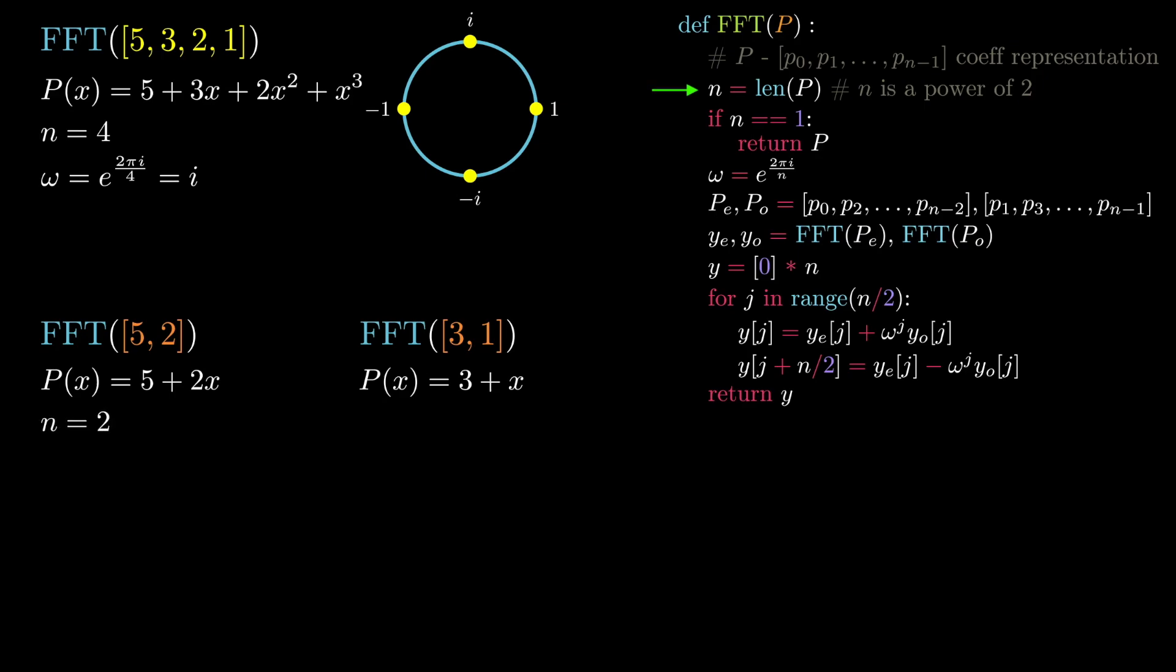Here we define n to be 2 and then define omega as e to the power of 2πi over 2, which is equivalent to negative 1, meaning that the polynomial will be evaluated at the second roots of unity or the following points on the unit circle.